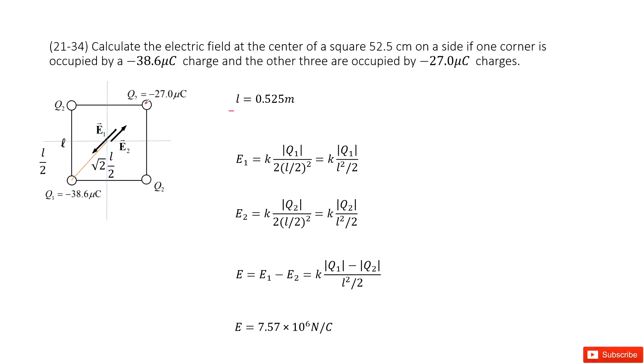So this corner is q2. q2 is a negative charge. And this corner is q1, still negative charge, but different magnitude.